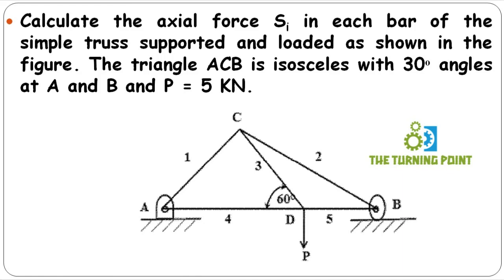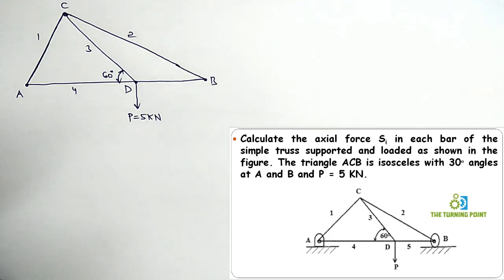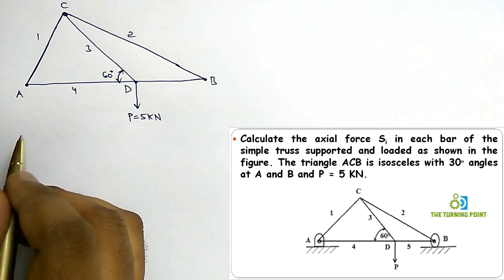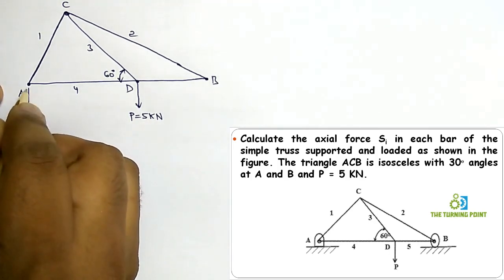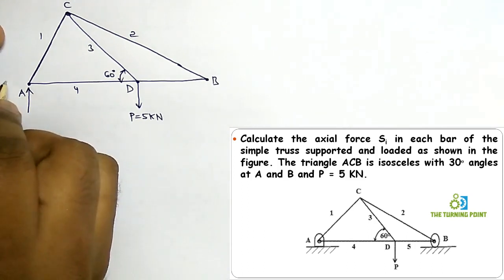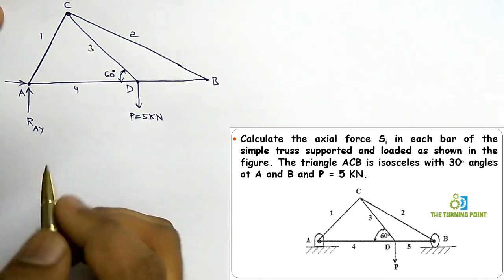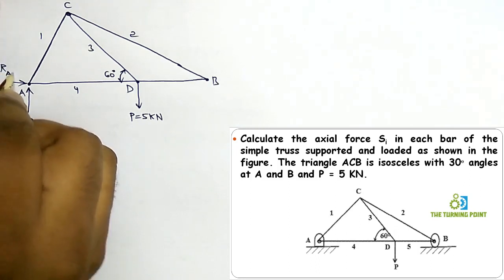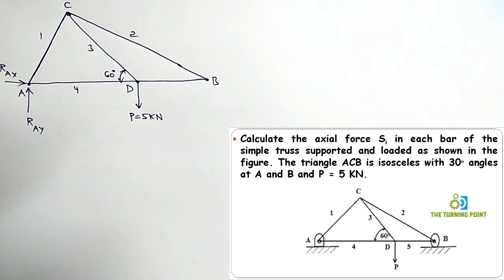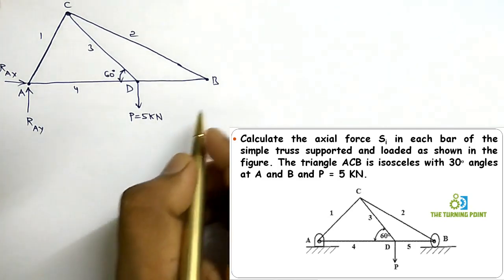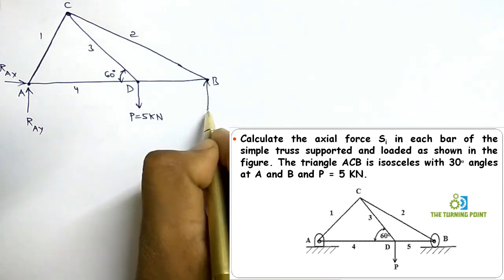Let's see how to calculate all the axial forces in the members by the method of joints. Observing the given figure, A is supported by a hinge, which means there is restriction in both x and y directions, giving reactions RAY and RAX. B is supported by a roller support, so there is a vertical reaction at B.